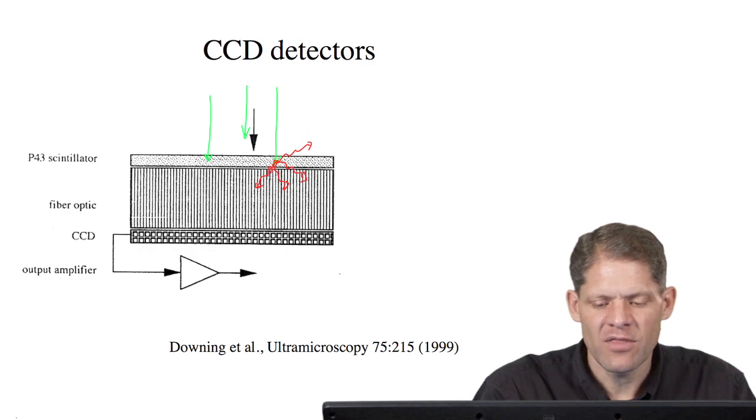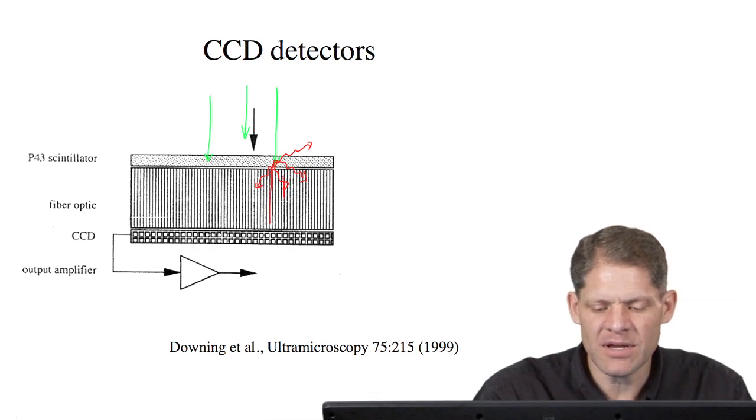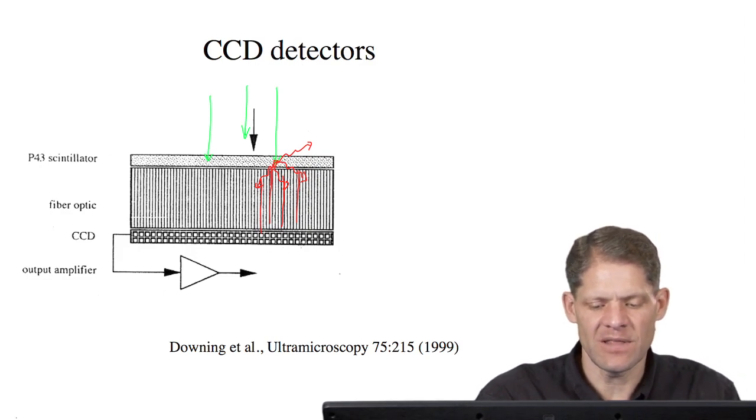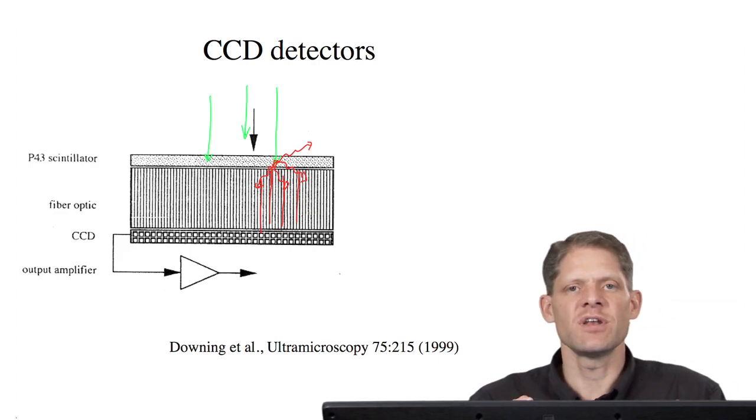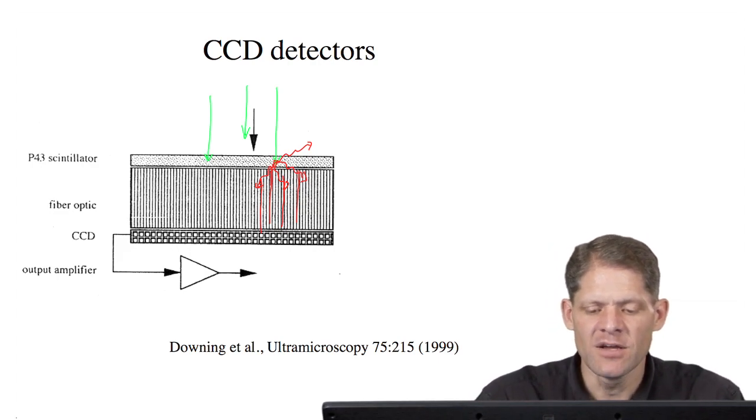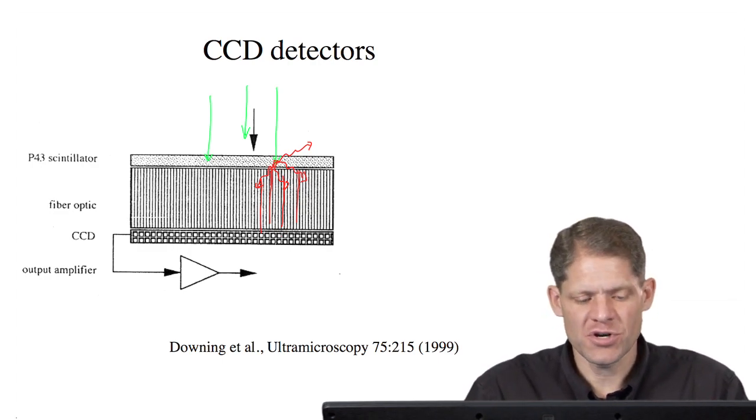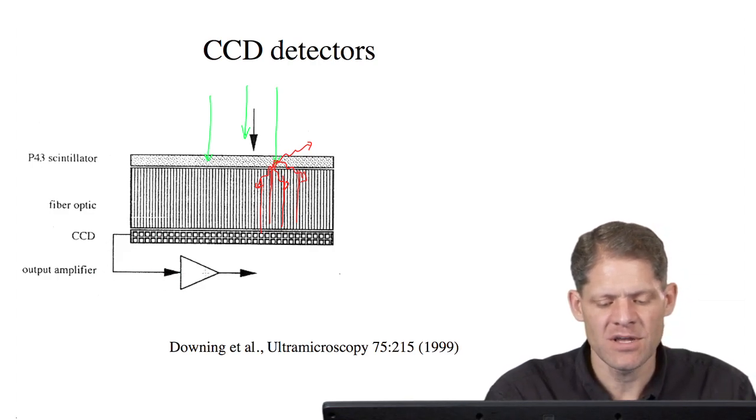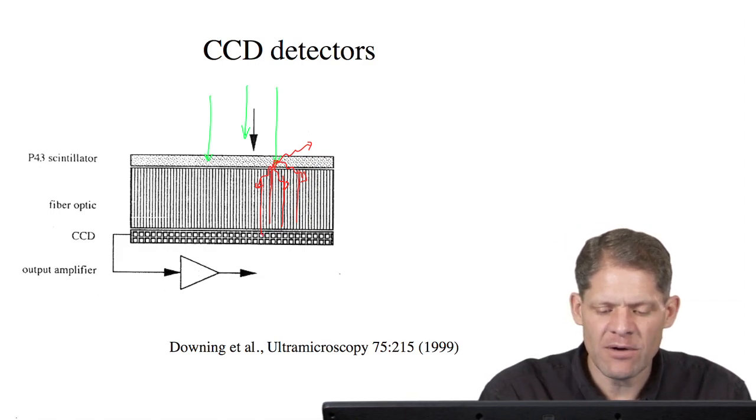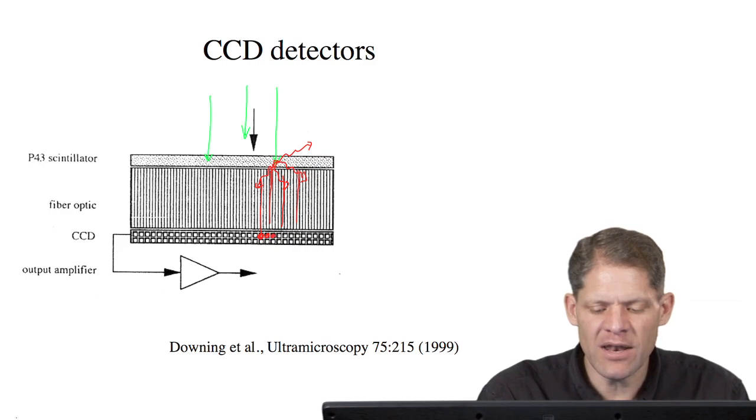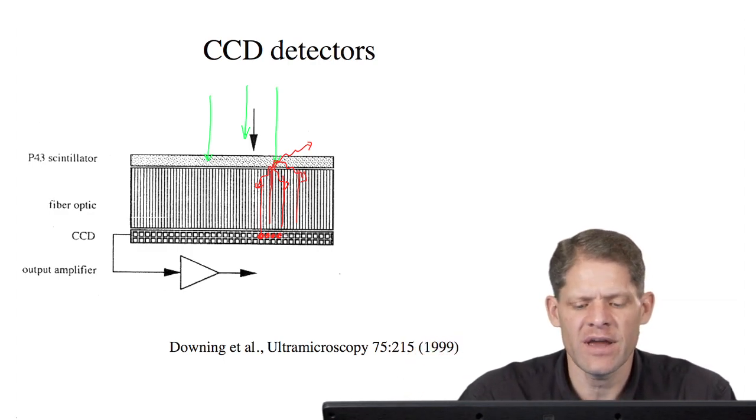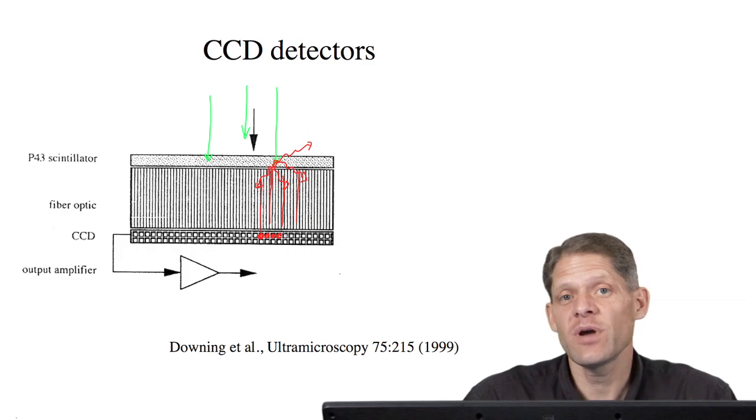As the photons hit the next layer, which is a fiber optic bundle, they are captured within the fiber optics and brought down towards specific pixels of a CCD layer. The photons are converted into counts and stored there until the end of the image. After the given exposure time, the CCD camera is read out through a series of output amplifiers, counting the charge collected in each pixel. You get a digital image rather quickly, in a matter of seconds.